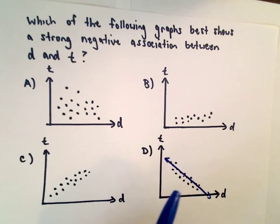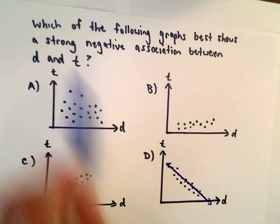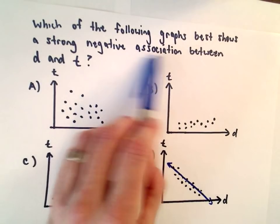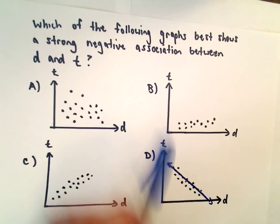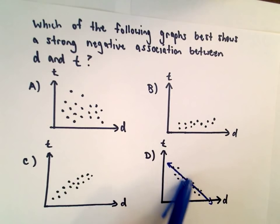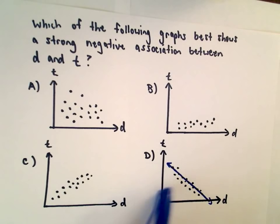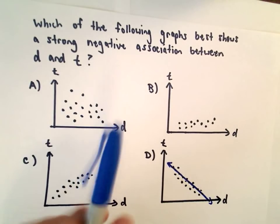But that's the basic idea - you want them to be bunched close together. That gives it a strong association. You want the dots to basically move down as you move to the right, so that gives you the negative association.